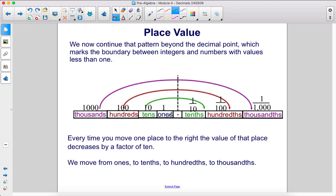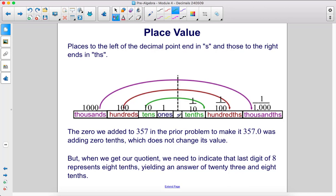So we move from ones to tenths, hundredths, and then thousandths. Places to the left of the decimal point end in s, and those to the right end in ths.